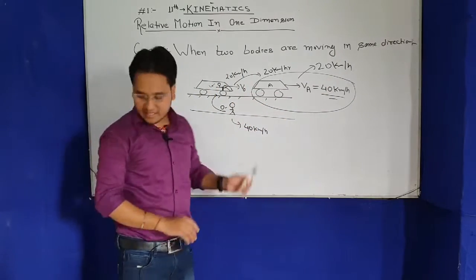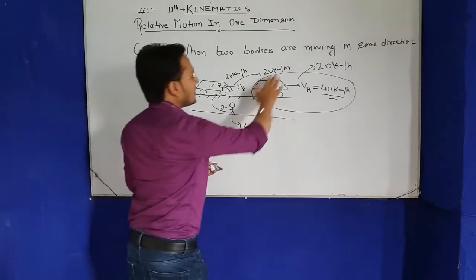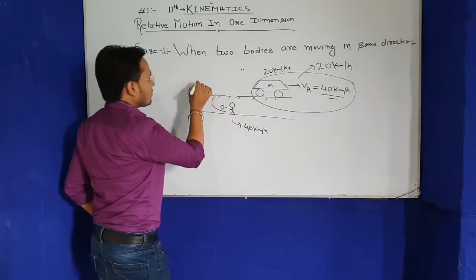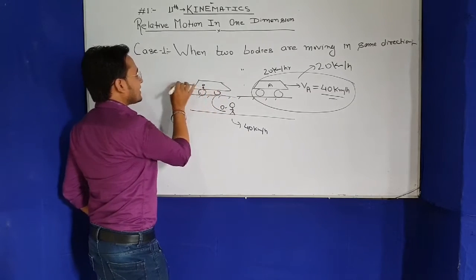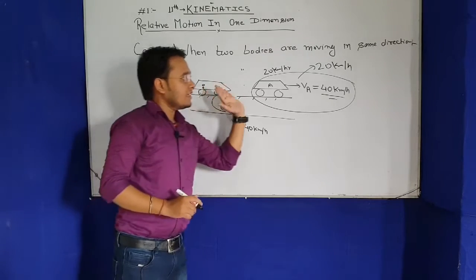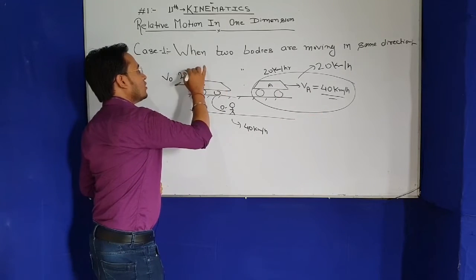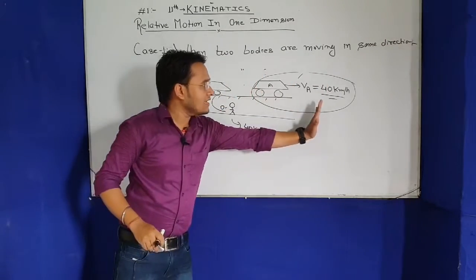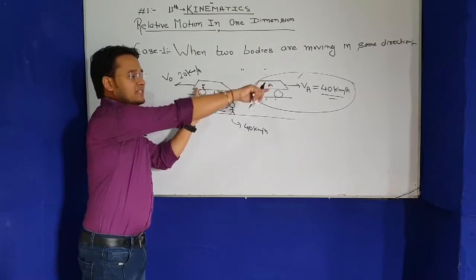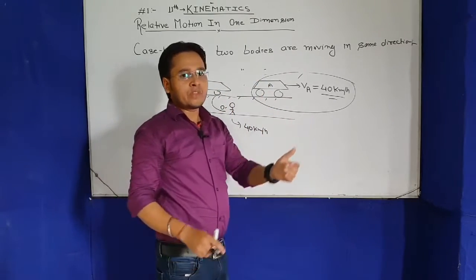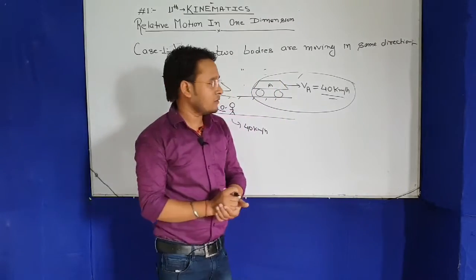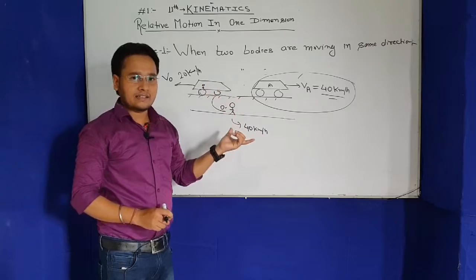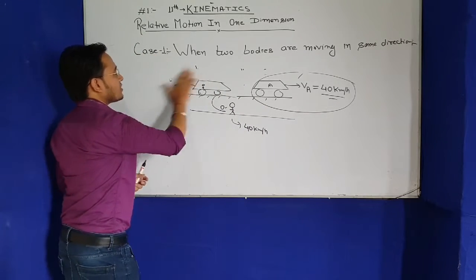This is called relative speed. There is one more case — when two bodies are moving in exactly opposite directions. From general observation, if one is going at 40 and the other at 20 in the opposite direction, the relative speed would be 40 plus 20, which is 60. When you walk on a road and watch a vehicle coming from the opposite direction, it appears to be moving faster — that's 60 in this case.